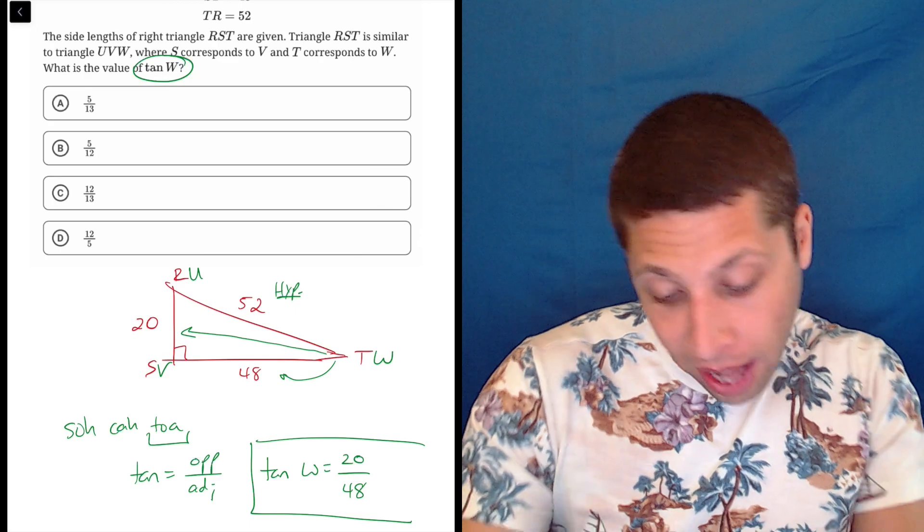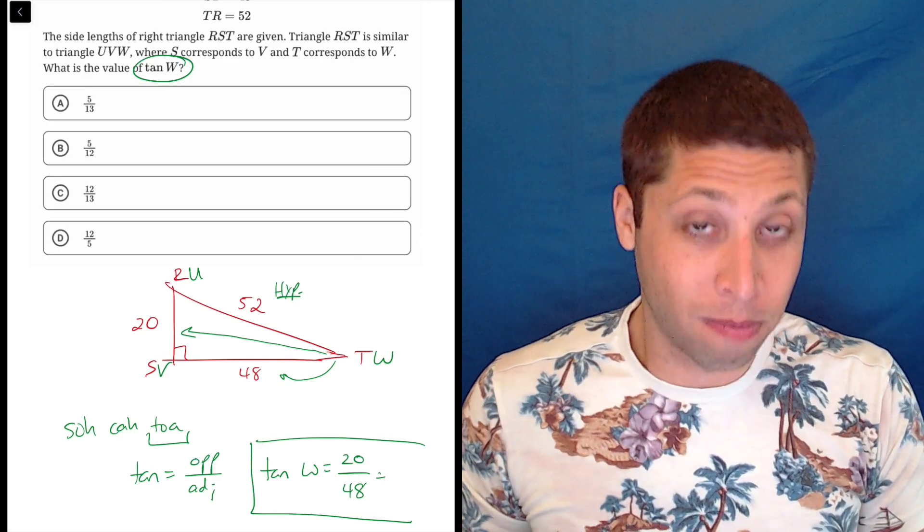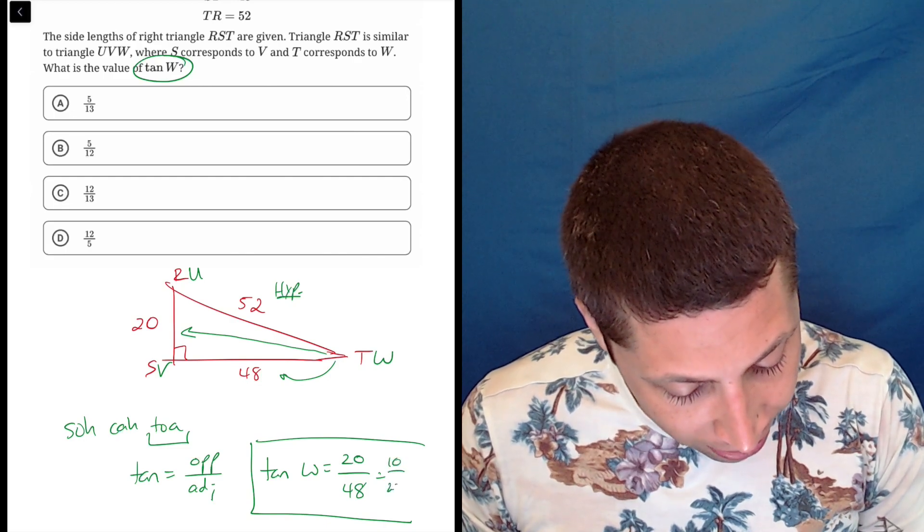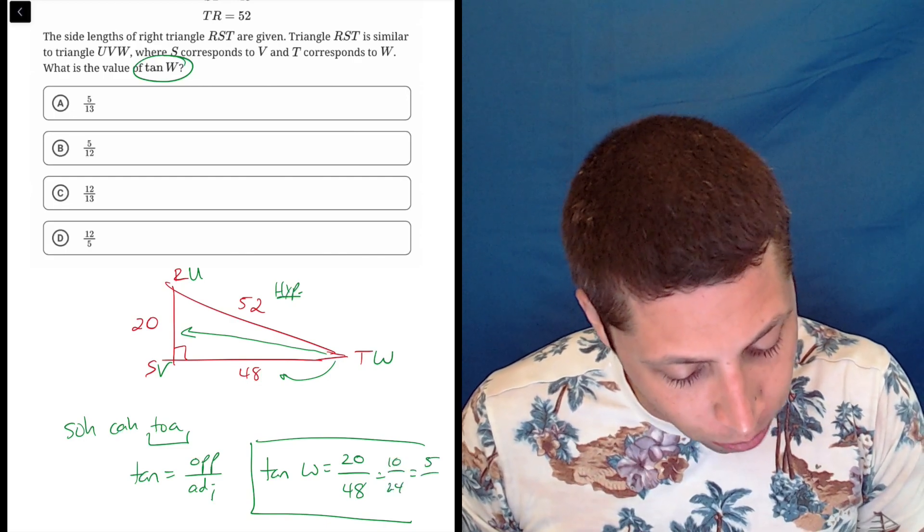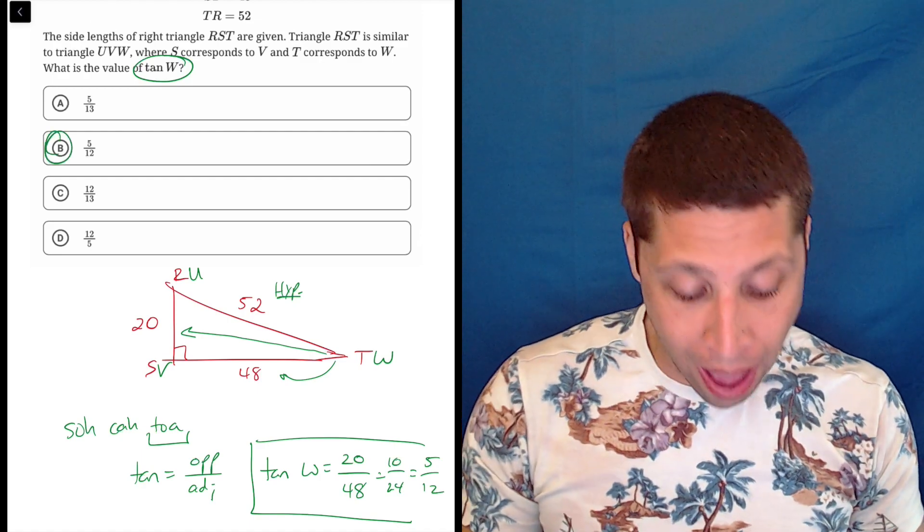Now that's not an answer, but that's okay because we can reduce it. So 2 goes into 20, that's 10 and 24, divided by 2 again, that's 5 and 12. And that is choice B. And now we have an answer.